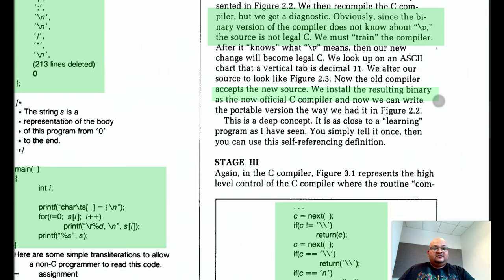At the end of this, we can install this new binary as the new official C compiler on the system. And now we can go about writing code with this new string feature. So that's how we can bootstrap a compiler to understand a new language feature. That was stage two.